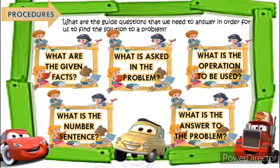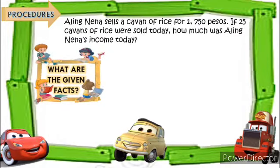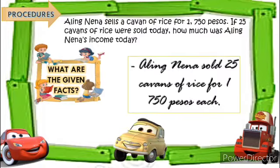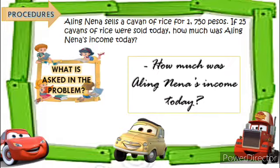Are you ready? Let's begin! Here is the problem. First thing to do is to answer the first guide question: what are the given facts? Aling Nena sold 25 cavans of rice for Php 1,750 each. That is the given facts from the problem. Number 2: what is asked in the problem? How much was Aling Nena's income today? That is the question inside the problem.